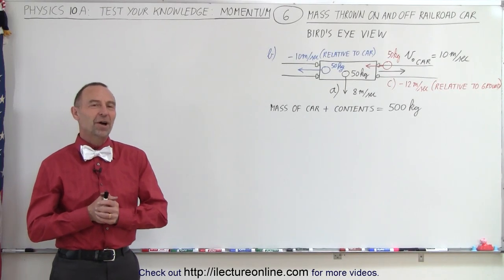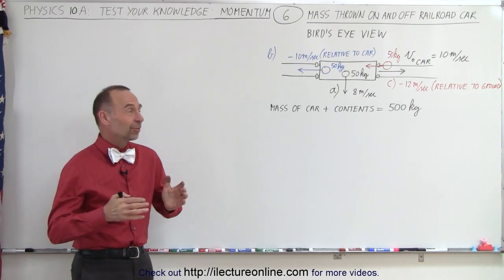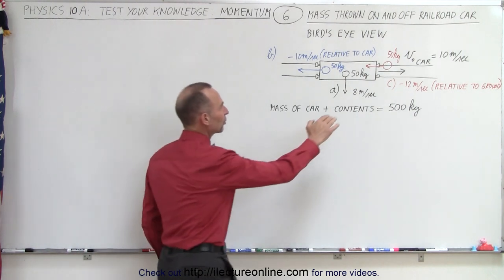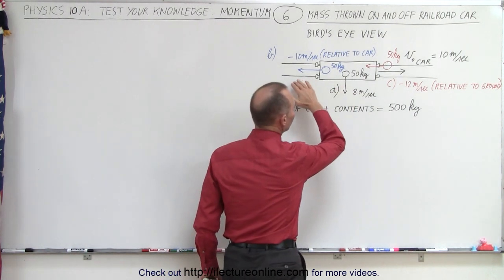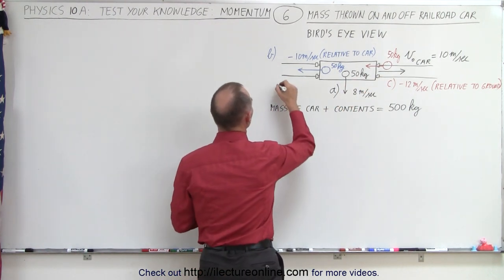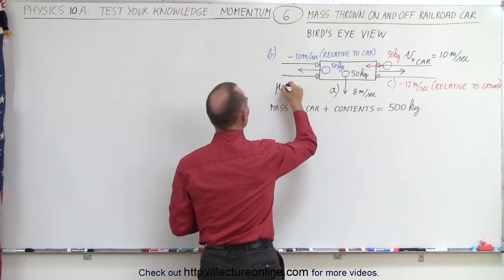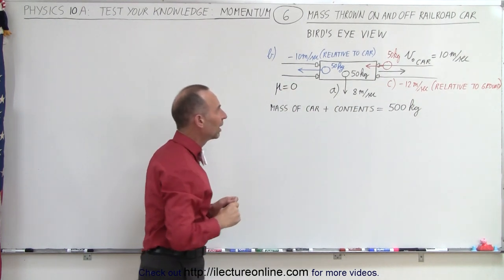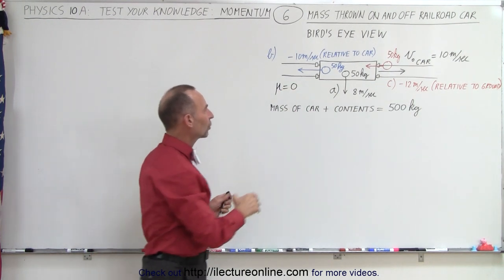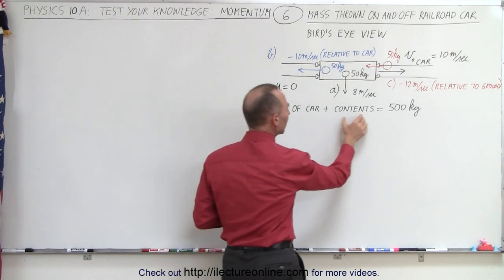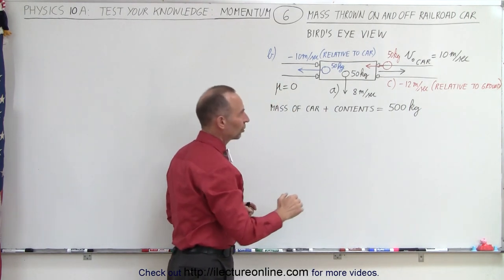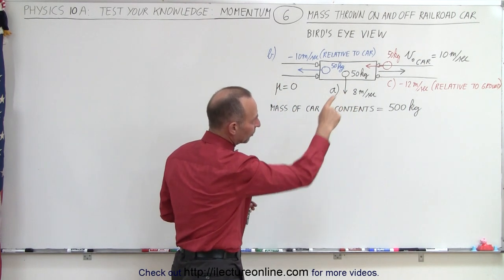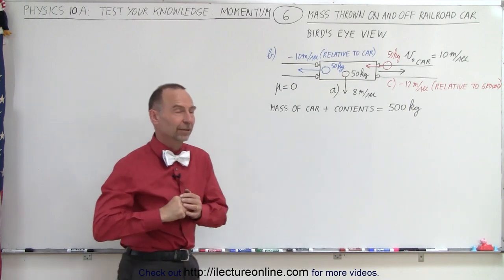Welcome to Electronline. Our next challenging problem is the following. Here we have a railroad car on railroad tracks. Let's assume that there's no friction between the wheels and the tracks, and the total mass of the car and the contents equals 500 kilograms. The car is moving down the track at a constant speed of 10 meters per second.